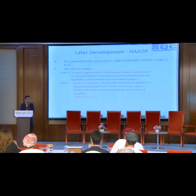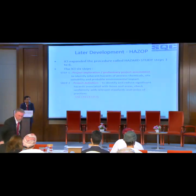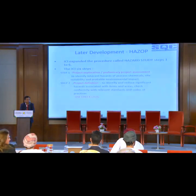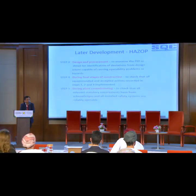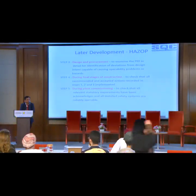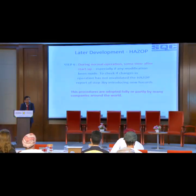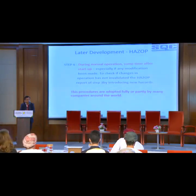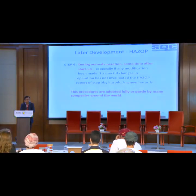Step one is project exploration and preliminary project assessment to identify the inherent hazards of processed chemicals, site suitability, and probable environmental impacts. Step two is for project definition — to identify and reduce significant hazards associated with the process, check conformity with relevant standards, and use a checklist. Step three covers the design and procurement stage. Step four is during the final stage of construction. Step five is during plant commissioning. Step six is during normal operation after start-up, especially if any modification is made to the plant design. These procedures are adopted fully or partly by many companies around the world.